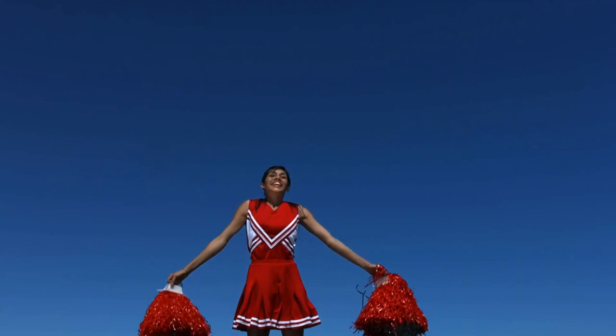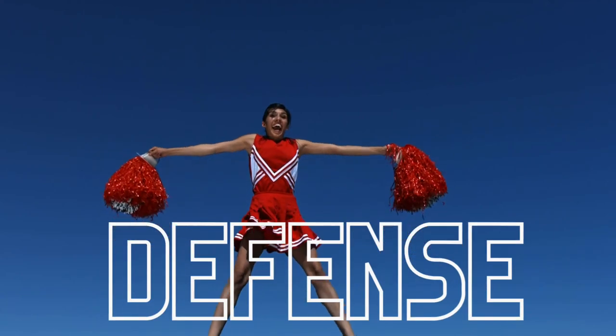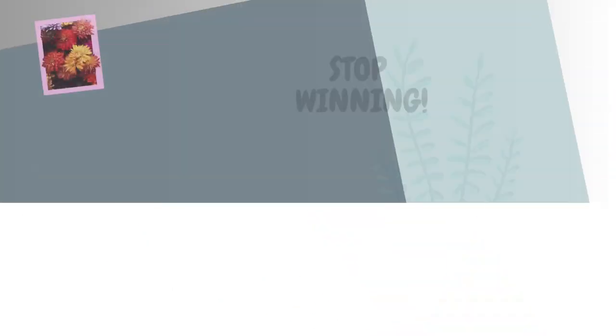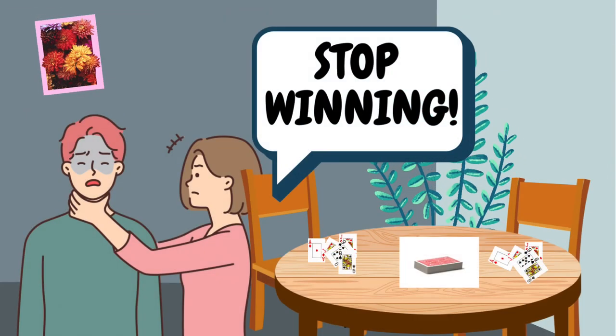Another tip is to save the Left Bower for defense, especially if your partner is the dealer or has chosen the Trump suit. It's a great backup for winning a trick when you're not leading.